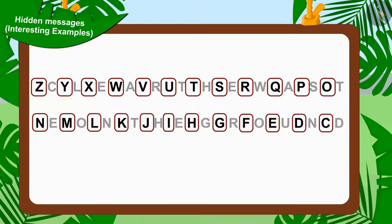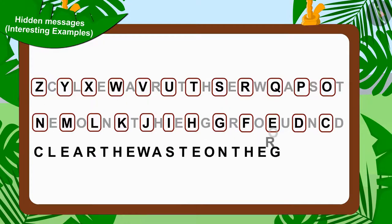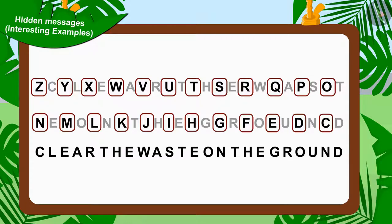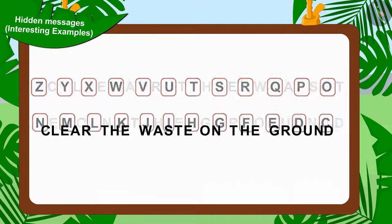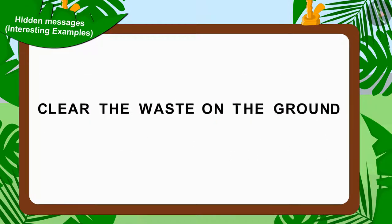Let us now write the remaining alphabets separately. Now do you understand Jeev's hidden message? Absolutely right. In this hidden message, it is written: Clear the waste on the ground.